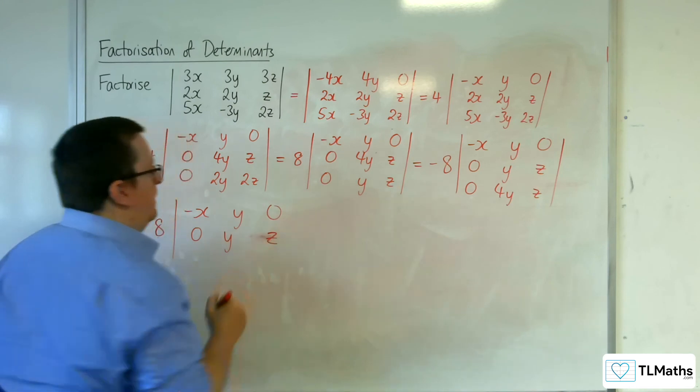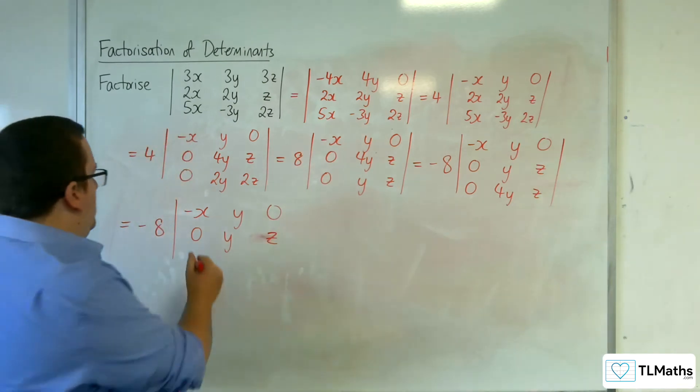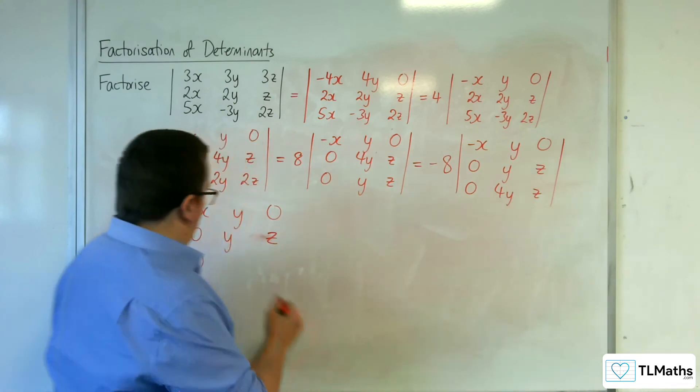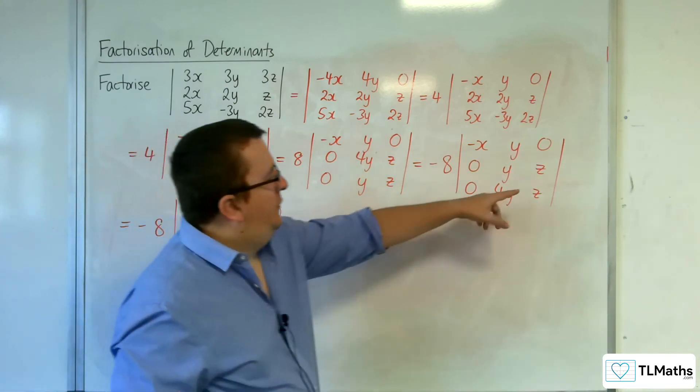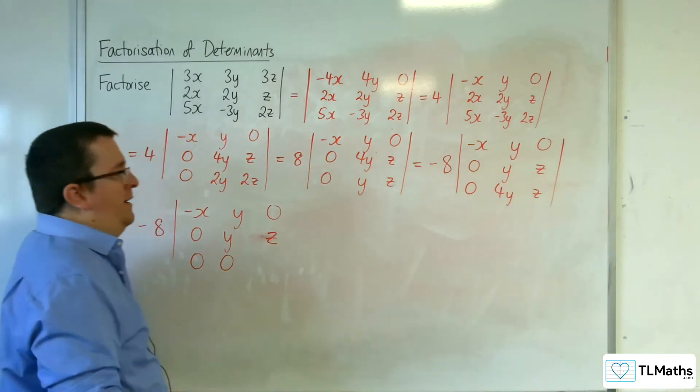That's not going to change. And then I've got 0, 4y take away four lots of y, so 0, and then z take away four lots of z is minus 3z.